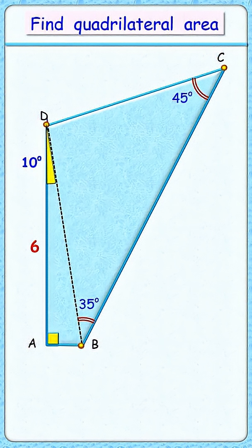This is my favorite question which has a magical solution and you are definitely going to love it. Can you find the area of this quadrilateral ABCD where one side length is 6 cm and these four angles are given to us?